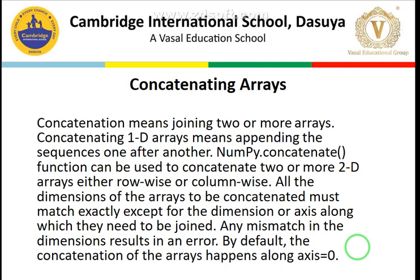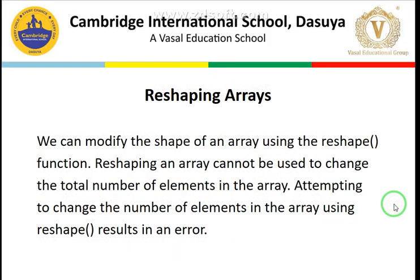We will clarify concatenation further in Jupyter notebook. Finally, we have reshaping the array. We can modify the shape of an array using the reshape function. Reshaping cannot change the total number of elements — we can only change the shape. For example, a 3×3 array has 9 elements total; we can change its order but not the element count. Attempting to change the number of elements using reshape will result in an error.